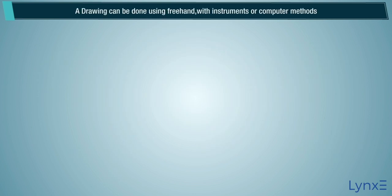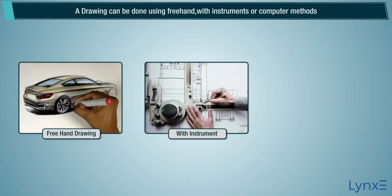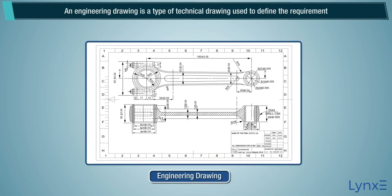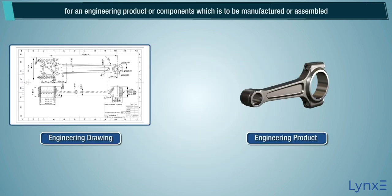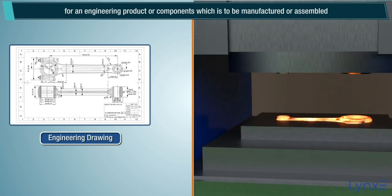A drawing can be done using freehand, with instruments, or computer methods. An engineering drawing is a type of technical drawing used to define the requirement for an engineering product or components which is to be manufactured or assembled.